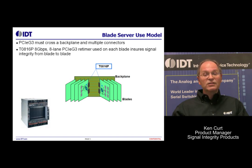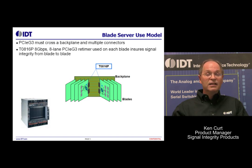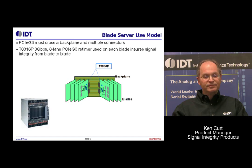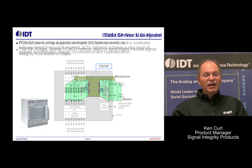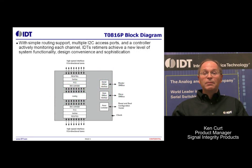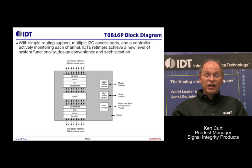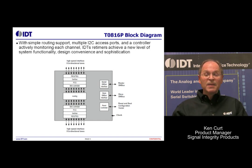In this case, it's shown as the T0816P, which is an 8-lane, 16-channel retimer. This slide shows the block diagram of our retimer — again, the 16-channel device. You can see going from top to bottom the 16 lanes.